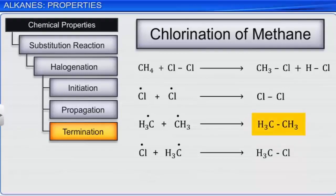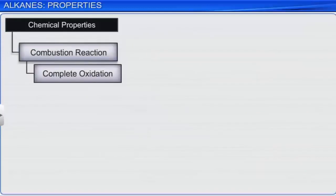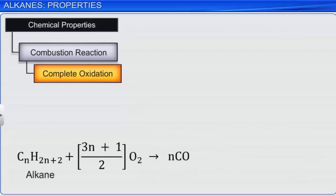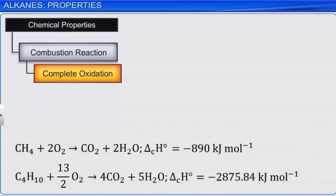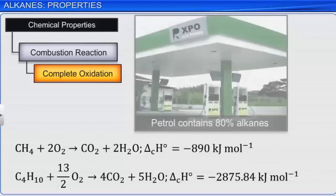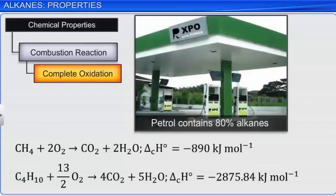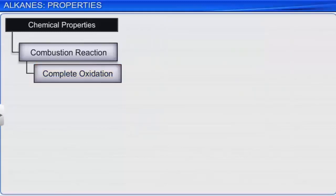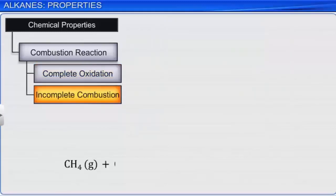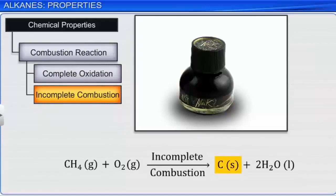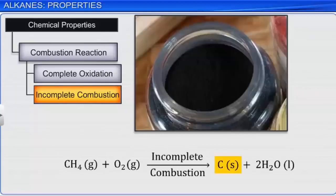Now let's understand the combustion reaction of alkanes. On heating, alkanes get completely oxidized to carbon dioxide and water, along with heat, in the presence of air or dioxygen. This is why alkanes are used as fuels. When alkanes undergo incomplete combustion, they form carbon black, which is used in the manufacturing of ink, printer ink, black pigments, and as filters.